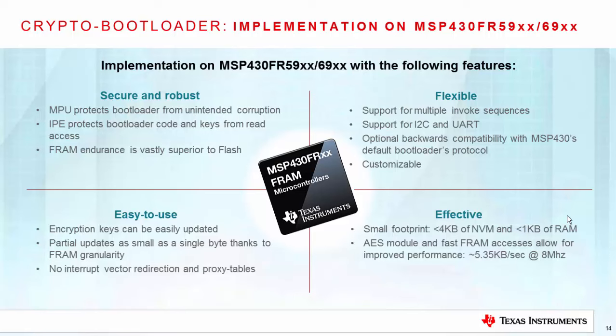This is with a device running at 8 MHz, which is the default frequency for the bootloader, and considering the latency of the communication interface, which is UART at 115,200 baud per second, and using the authenticated encryption method aided by the AES module. This throughput is achieved thanks to FRAM's fourth advantage, which is its write speed of less than 50 nanoseconds, which is up to 1,000 times faster than Flash or EEPROM.